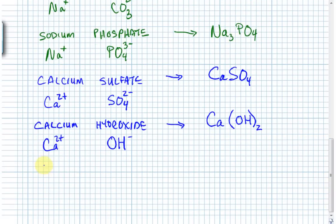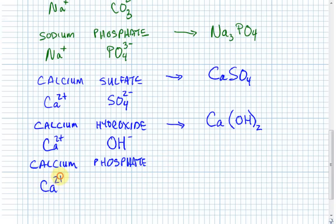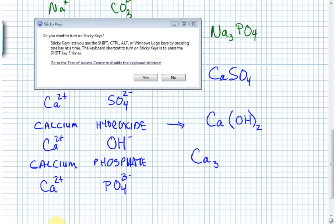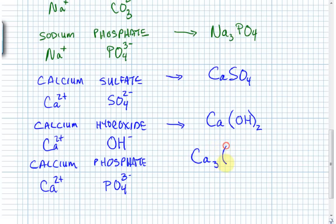Calcium phosphate: calcium is plus 2, phosphate is PO₄³⁻. Now I have the challenge of combining plus 2 and minus 3. I need three calciums — three times plus 2 gives plus 6. To balance that, I need two phosphates — I put PO₄ inside parentheses with a subscript 2 outside. Two phosphates each at minus 3 gives minus 6. Plus 6 and minus 6 equals zero — the overall charge is zero, as required for ionic compounds.